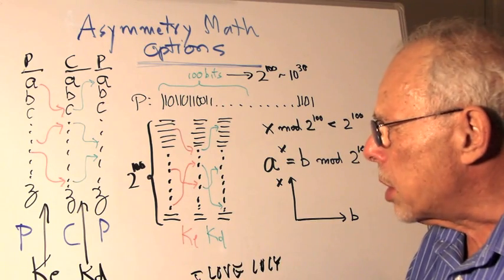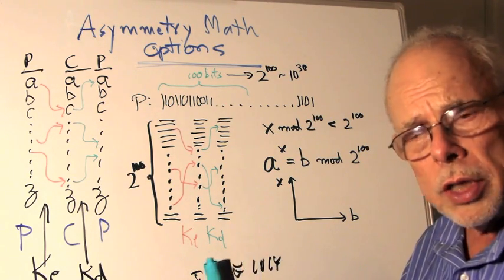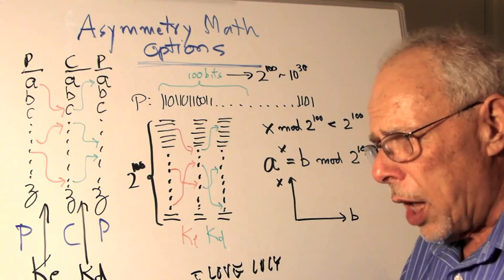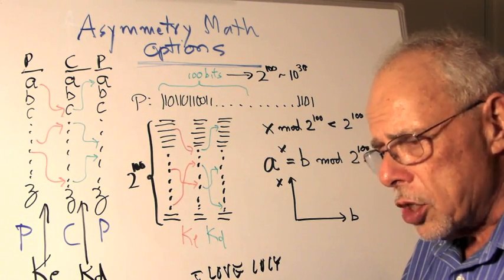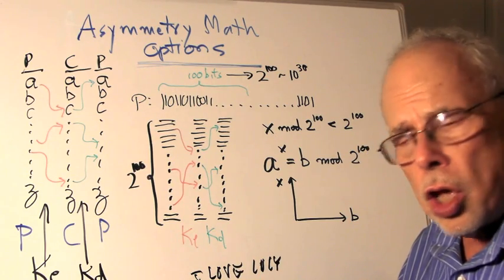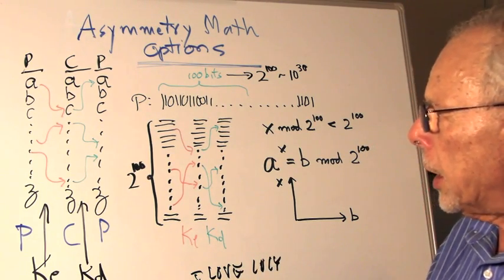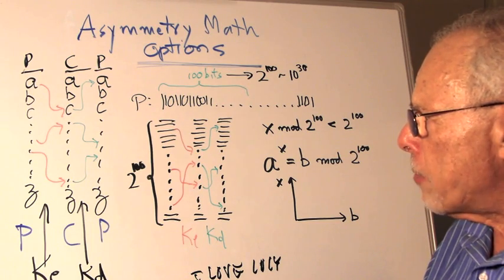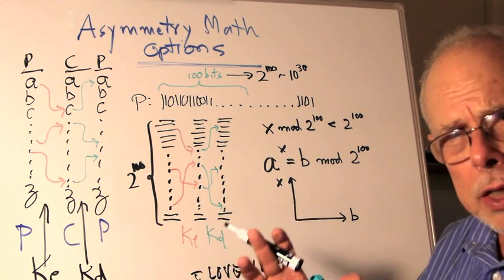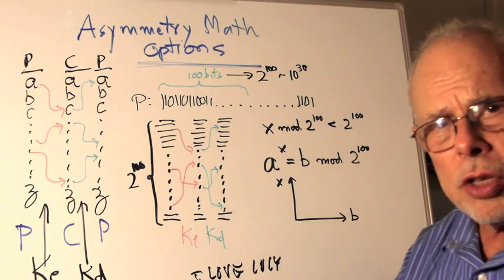We know that this is not very robust because when you replace a letter by the same letter all the time, you allow for the cryptanalytic tool that measures the frequency of letters to break the code very quickly. However, if we take the same idea and just broaden it, instead of 26 letters, we will have a much larger number.